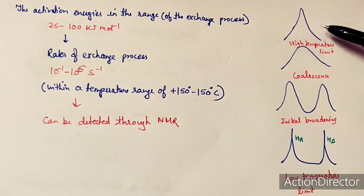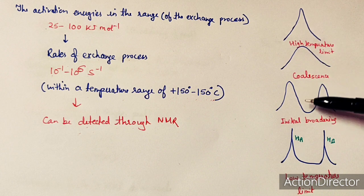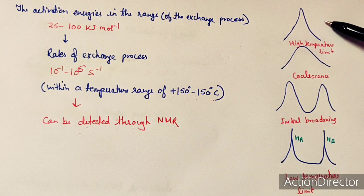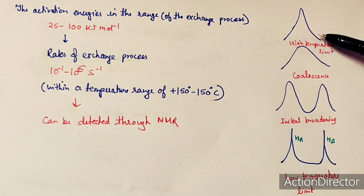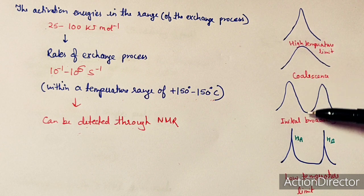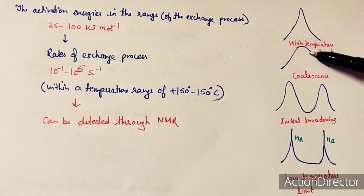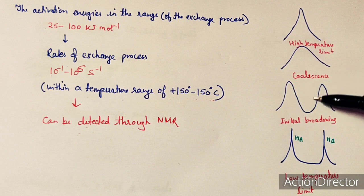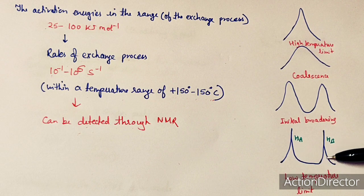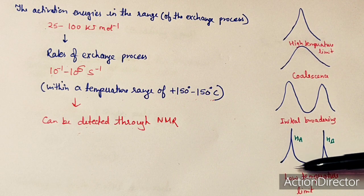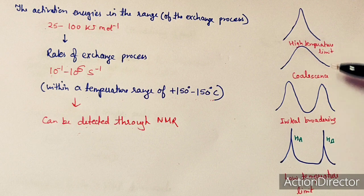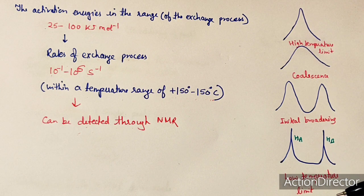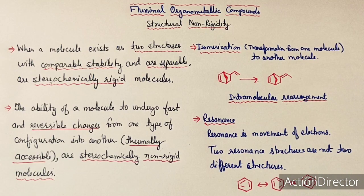On cooling the sample from higher to lower temperature, the same changes occur in reverse order — the peaks start separating and at the lower temperature limit the two peaks are again separated. This process is known as coalescence.